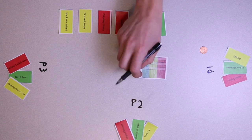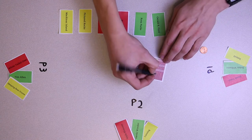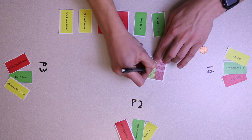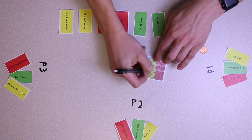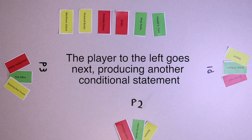Players then mark off what new information they have on their checklists. The player to the left goes next, producing another conditional statement.